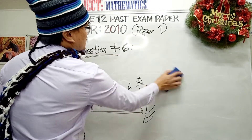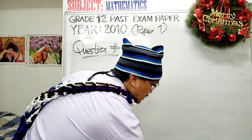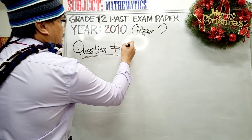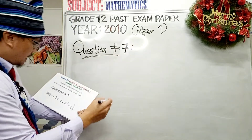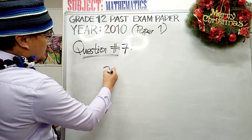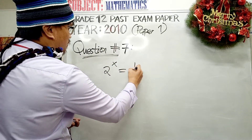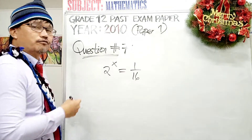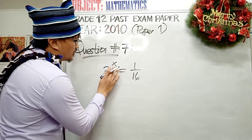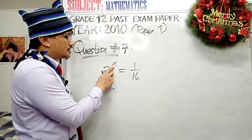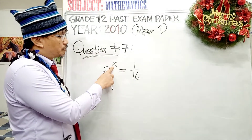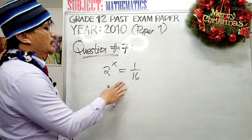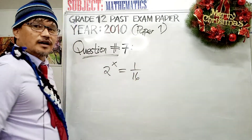We are now on question number seven, part A of paper one, grade 12 advanced mathematics. The expression in the indicial equation is 2 to the power of x equals 1 over 16. The pronumeral x is located in the index position — the power position.